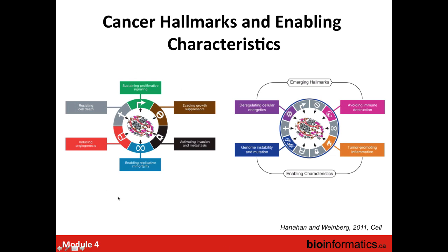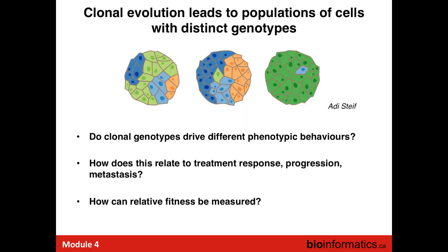Our foundation for understanding the biology of cancers can be described as the set of six hallmarks—the acquired functional capabilities that enable cancer cells to survive, proliferate, and metastasize. The acquisition of these capabilities is made possible by two enabling characteristics: inflammation from the microenvironment, and—relevant to our discussion today—genomic instability. Genomic instability enables cancer cells to have the genetic alterations that drive tumor progression. Understanding tumor biology is then really an exercise in measuring and detecting these divergent clonal populations and linking them to disease progression and response to treatment.